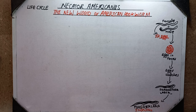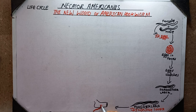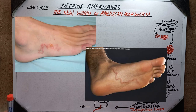The filariform larva is the infective stage of the hookworm and it will cause infections in humans. All these stages occur in the external environment. This filariform larva is ready to enter the human body through the skin. Hookworm infection is mainly acquired by walking barefoot on contaminated soil.